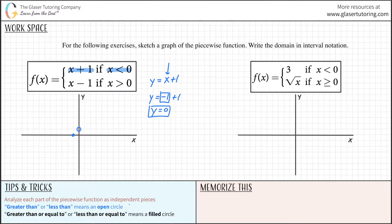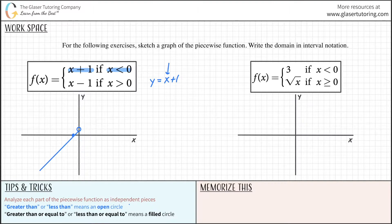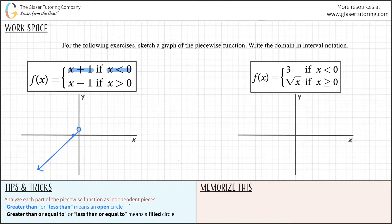We can see the pattern — it's a linear function. So we draw the linear line through those points and extend it with an arrow, going on forever. That takes care of the first part of the piecewise function.